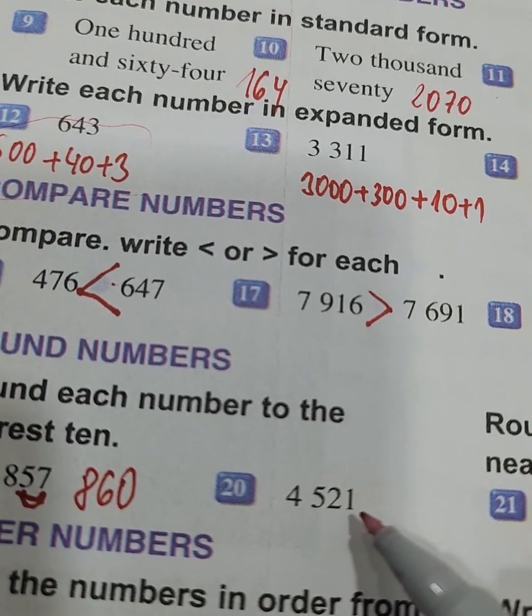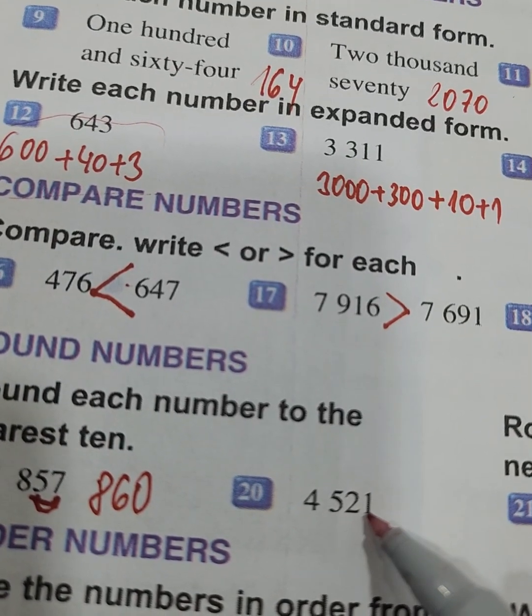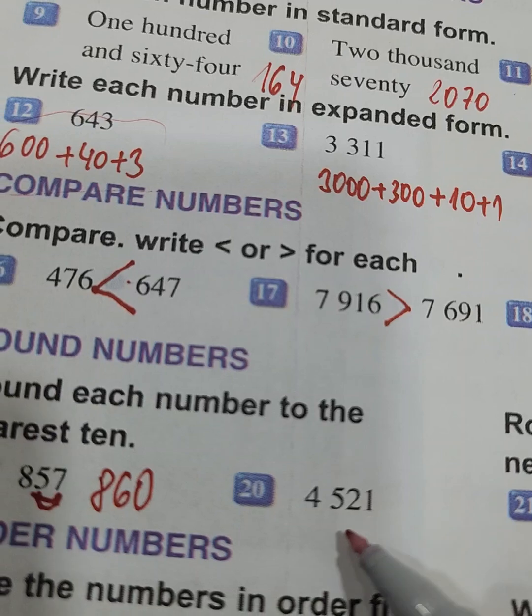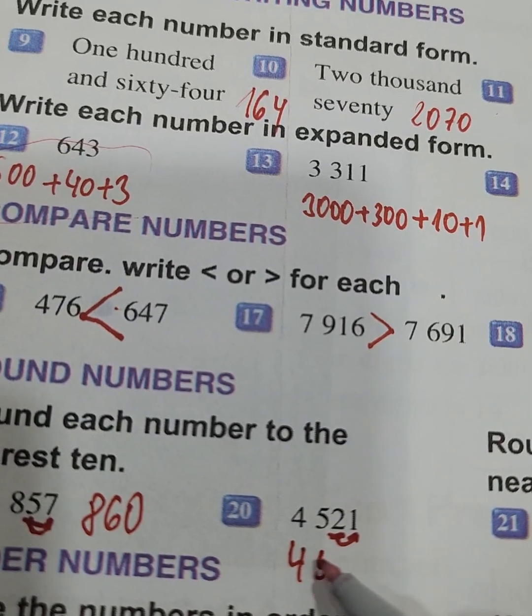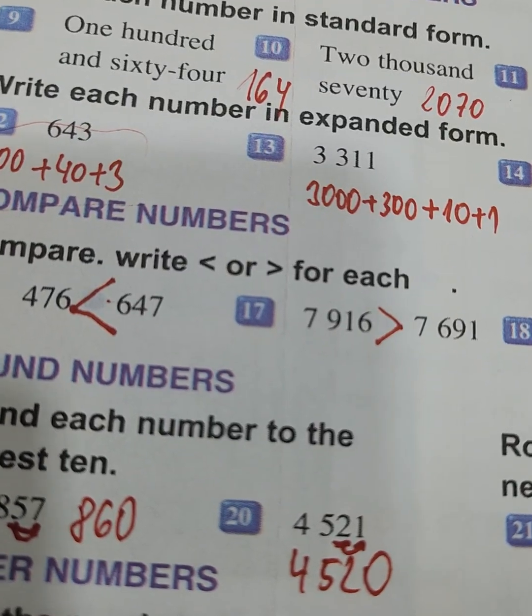So we will go up and it's 860 to the nearest 10. For 4521 to the nearest 10, this is the place of tens. Look at this one, so it will be like this.